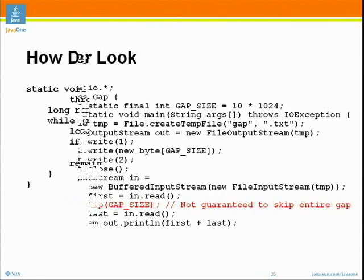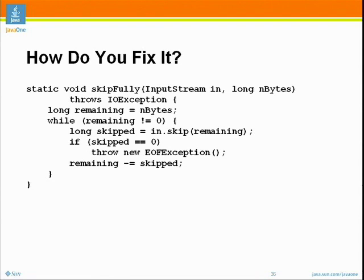So how do you fix it? There's not a one-line fix. A lot of times when you need more than a one-line fix, the best thing to do is compartmentalize it — define your own method. Here we're going to define a method called skipFully that will in fact skip all the bytes you requested and will never return a short number of bytes. If it gets back that it skipped zero bytes, it will throw an EOFException, because that is the one place where skip is documented to return zero — when you're at end of file.